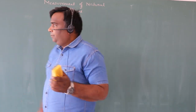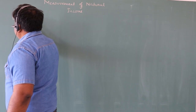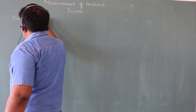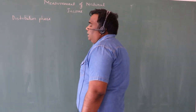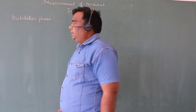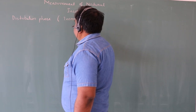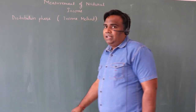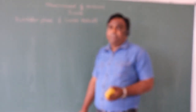The first phase is the distribution phase. In the distribution phase, we measure the factor income, which we measure using the income method. In the income method, we measure the national income by looking at just the factor income.